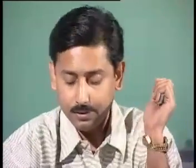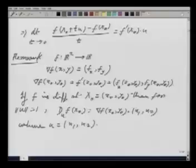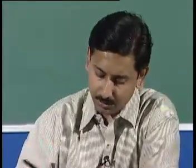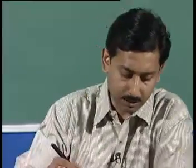Some care has to be taken here: the mere existence of the gradient vector — that is, grad f — does not give us the existence of the total derivative, nor the existence of directional derivatives in all directions. For that, let us look at a simple example.